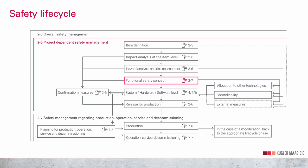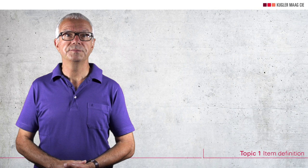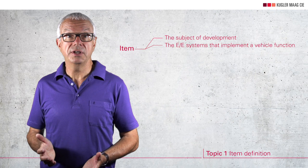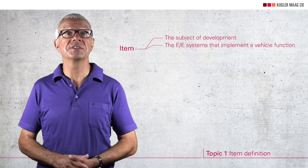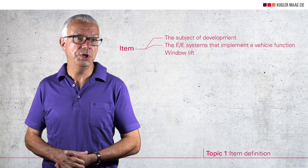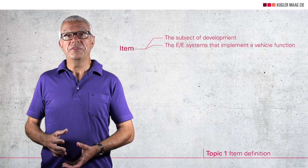We start with topic number 1: item definition. The term 'item' denotes the subject of development — your product. These are one or more interacting electrical and/or electronic systems that implement the desired function. Examples of items are automatic cruise control systems, airbags, or electrical components as simple as a car window mechanism, which for example can trap an arm or head. Developing the item means that different kinds of requirements and boundary conditions have to be put together.